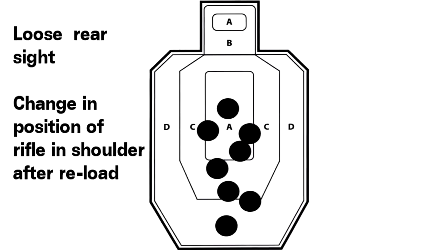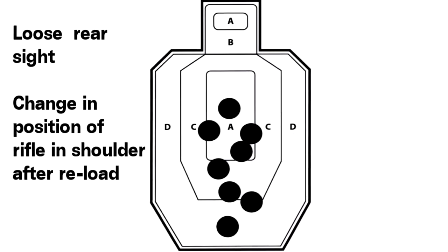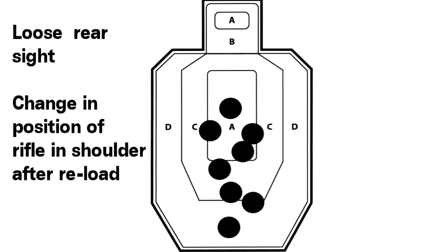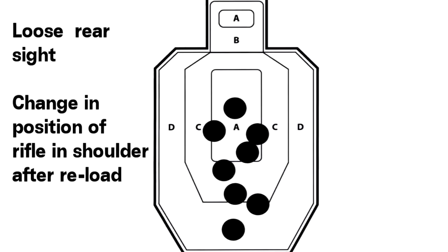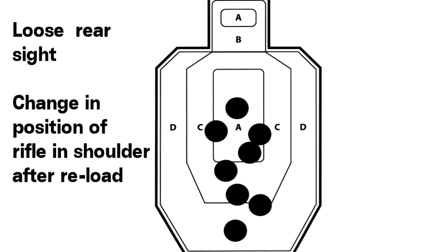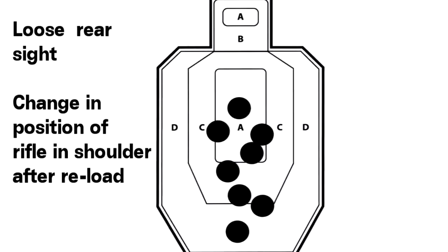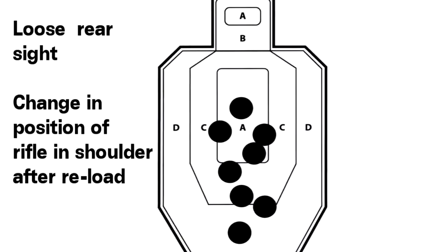Sample target number two. Probable cause number one: sling becoming looser with each shot. If you're using a sling, the sling keeper is slipping or the arm loop is otherwise loose, allowing the sling to slip down on the arm.